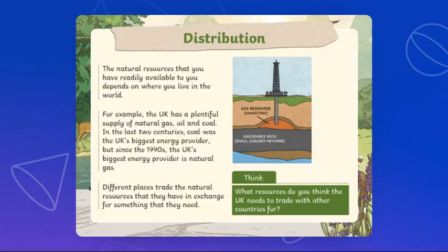How are natural resources distributed? The natural resources available to you depend on where you live in the world. For example, the UK has a plentiful supply of natural gas, oil, and coal. In the last two centuries, coal was the UK's biggest energy provider, but since the 1990s, natural gas has taken that role. Different places trade the natural resources they have in exchange for something they need.